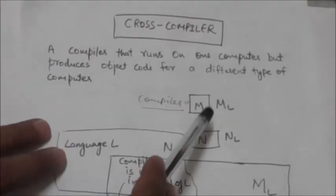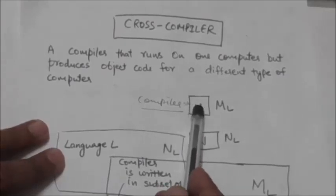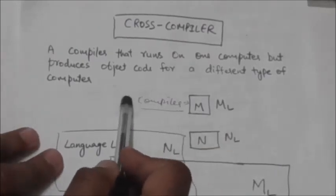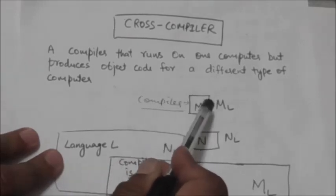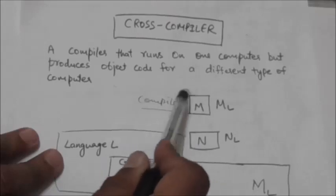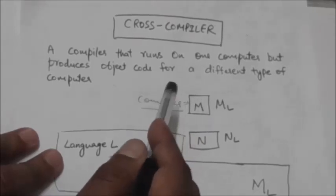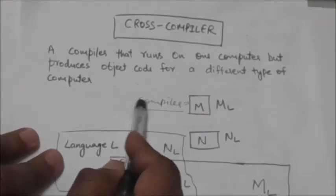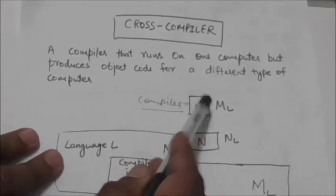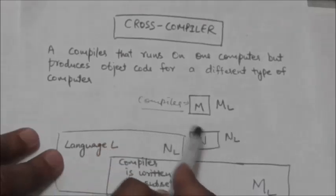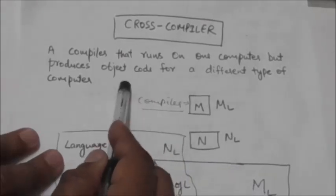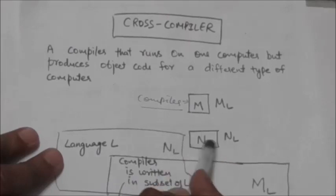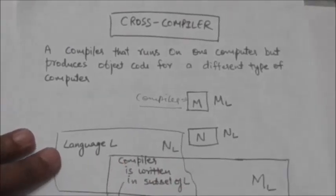Now consider that there are two machines M and N. The machine language of machine M is denoted by ML and the machine language of machine N is denoted by NL. Suppose there is a compiler that runs on machine M, but it generates code which is executable on machine N — it translates the source program into language NL so that it could be executed on machine N. Such a compiler is called a cross compiler.